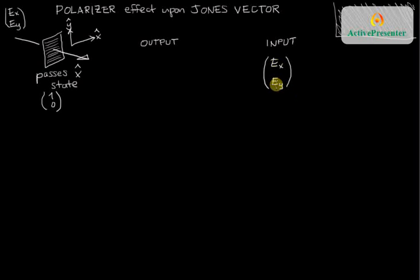If Ex and Ey are real numbers, then this means that this is a linearly polarized state, but they don't have to be real numbers. They could have a phase relationship relative to each other, in which case the state in general will be elliptical.